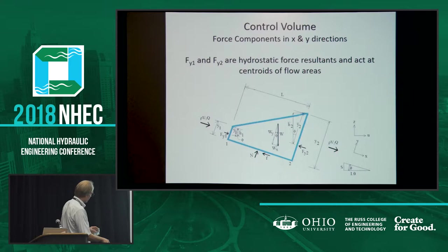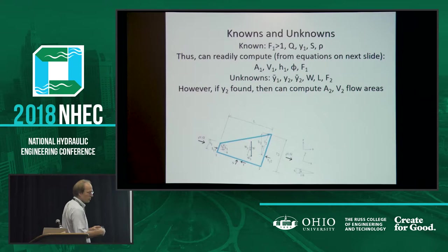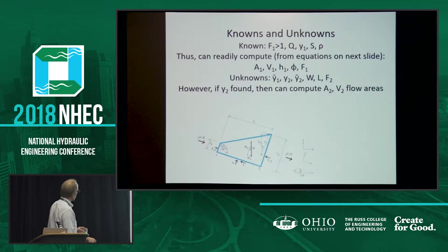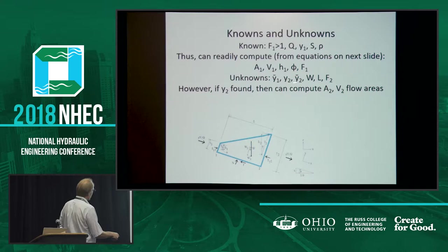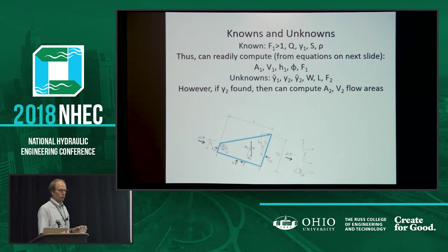To review what we know: flow rate Q — that's the design value given by the client — Y1 the upstream depth, slope of the pipe, and water density. In order to have a hydraulic jump, we know F1 is greater than 1. From geometry we can readily compute area 1, Froude number at location 1, and the angle of the pipe. Our unknowns are everything at location 2. Once we get Y2, we can get Ȳ2 (the centroid distance) and area 2 — Y2, A2, and V2 are all related.